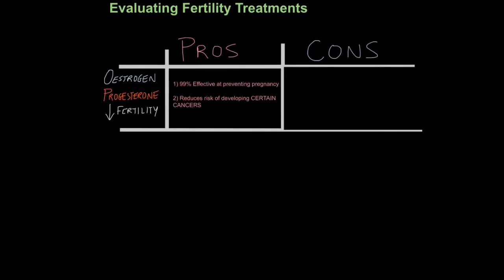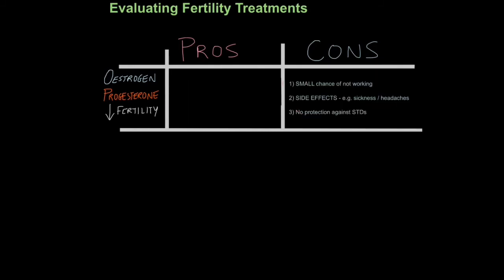The pros of the contraceptive pill are that it is 99% effective at preventing pregnancy, and it is also linked to reducing the risk of developing certain cancers related to hormone levels. The cons include a small chance of not working, possible side effects such as sickness, headaches, and irregular bleeding, and it does not offer any protection against sexually transmitted diseases.